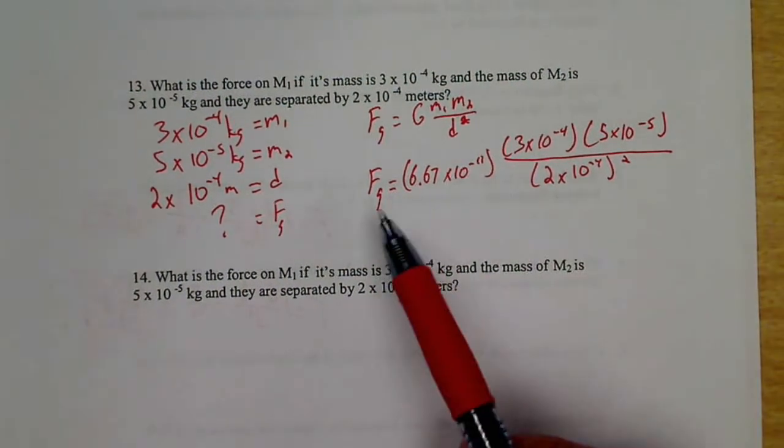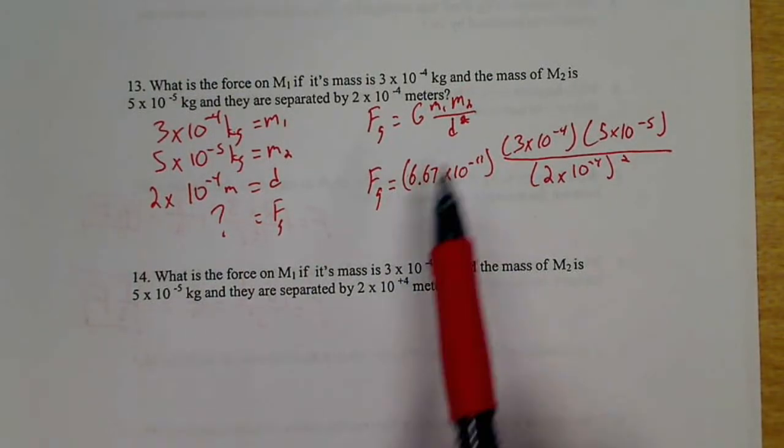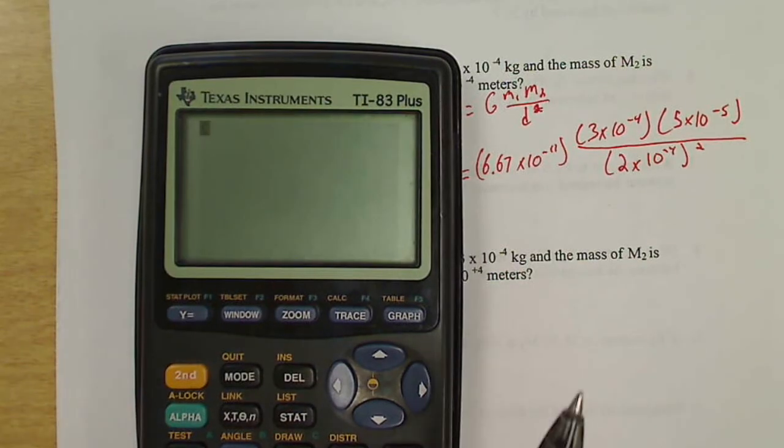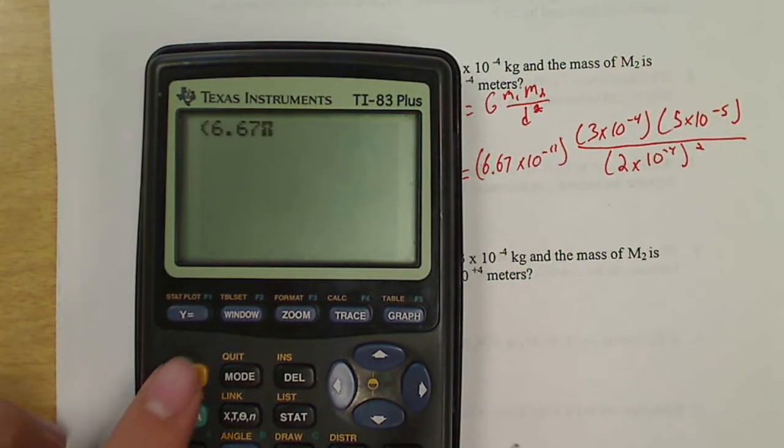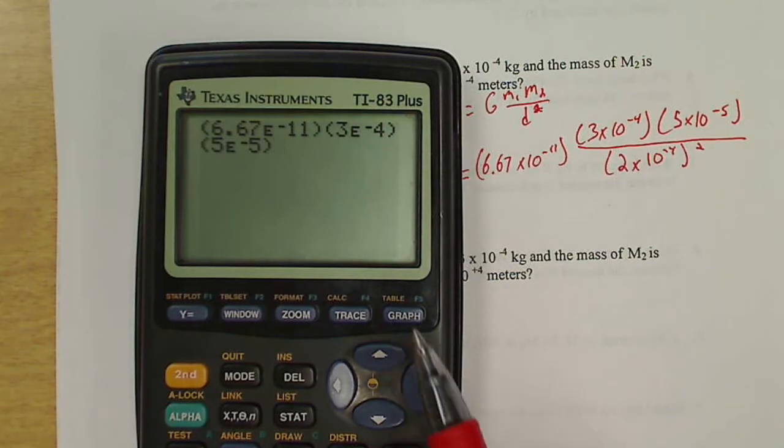Do use your parentheses. They'll also help you see that there's four things: G, M1, M2, D squared. Otherwise all those numbers might start to run together. So 6.67 E negative 11 times 3 E negative 4 times 5 E negative 5. Notice I'm not putting times in between there. I could, it wouldn't make a difference, but because they're next to each other it's going to times it for me.